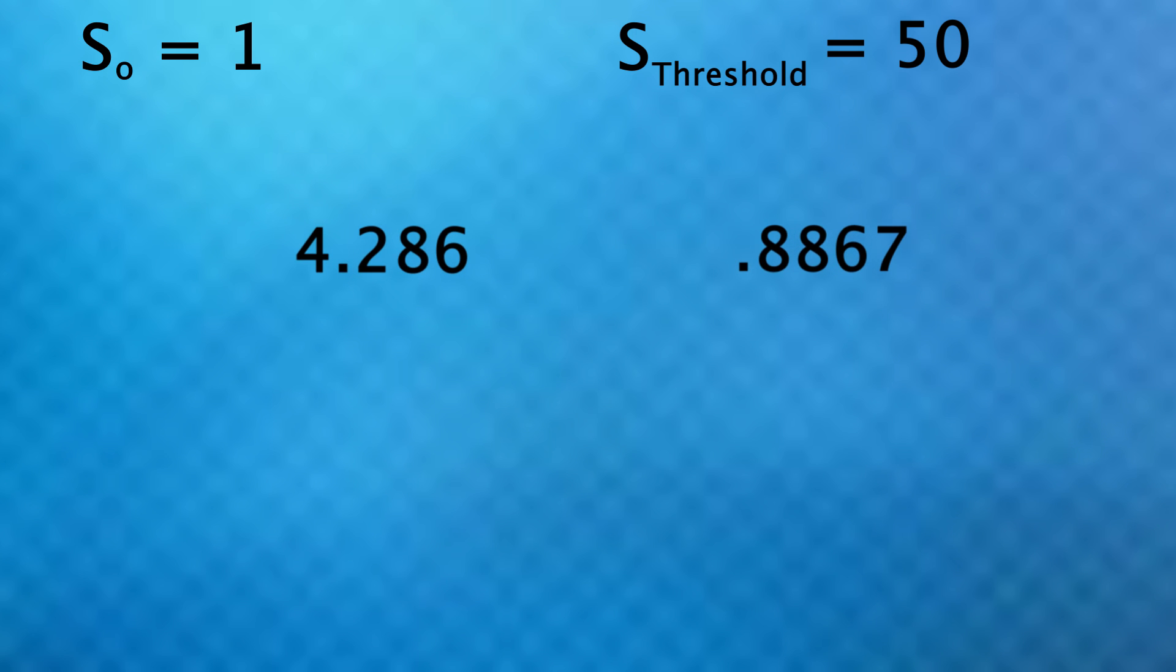On any given day, if a crime is committed, we'll multiply our s value by the 4.286. If however no crime occurs, we multiply by the 0.8867. And by the way, if the s value goes below 1, we reset it to 1.